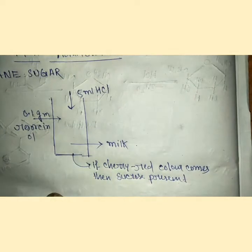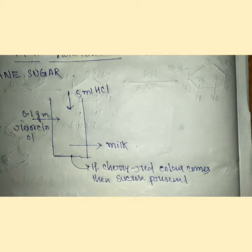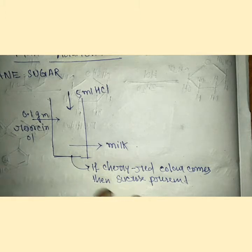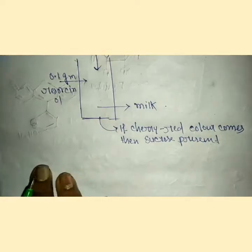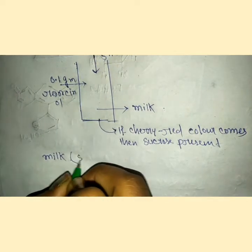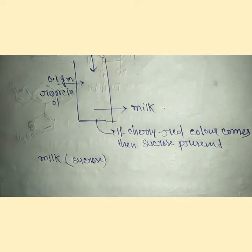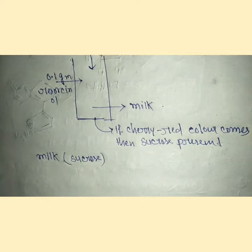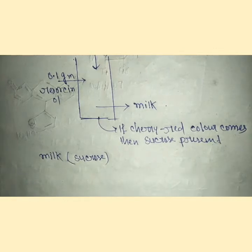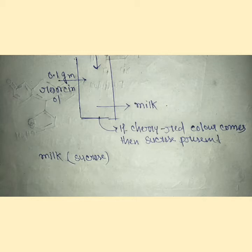But the reason behind it, what is the mechanism? I want to share with you, and this is most important. Usually this type of question comes. We should be curious about what happens when the cherry red color comes and we can tell that sugar is present due to cherry red color. In milk, sucrose is present. Milk tastes sweet because sucrose is present.